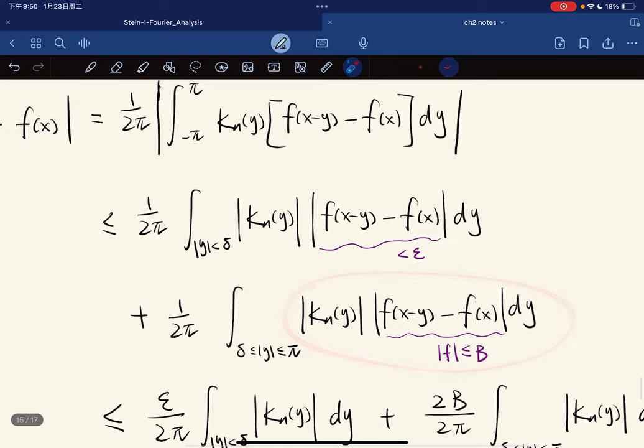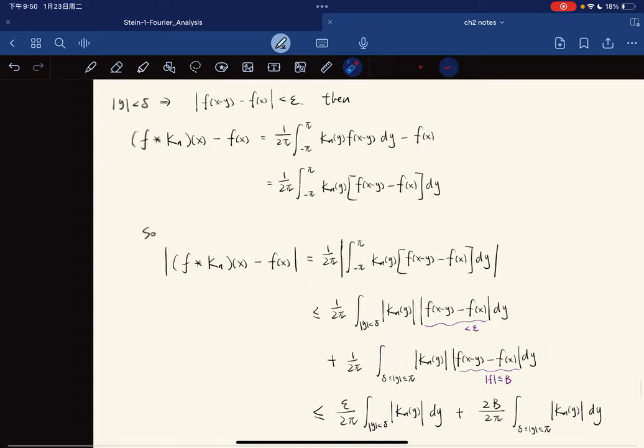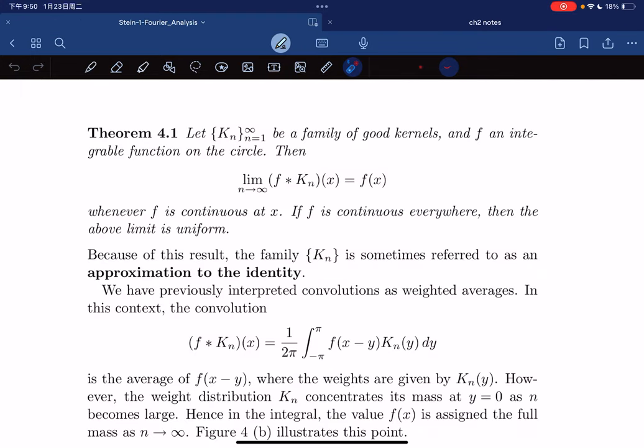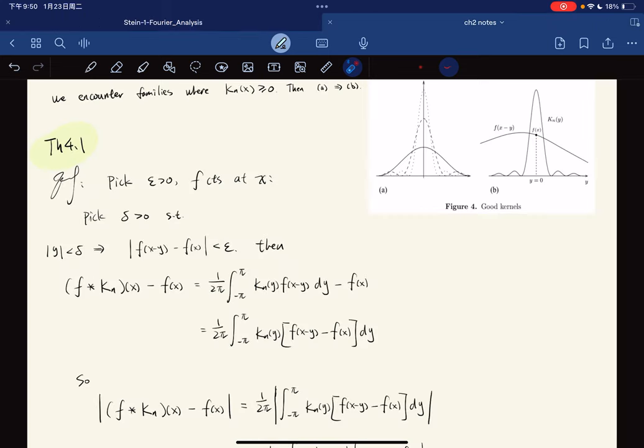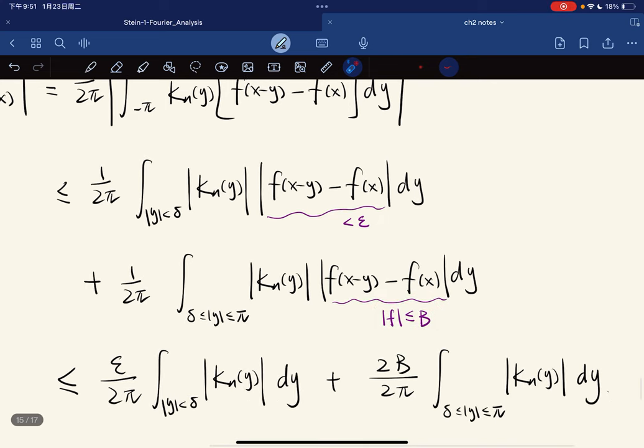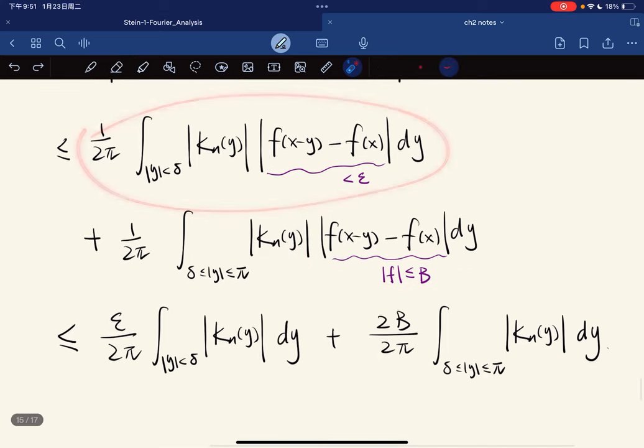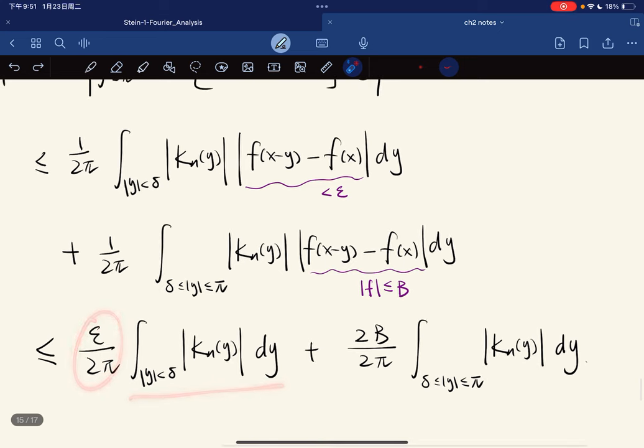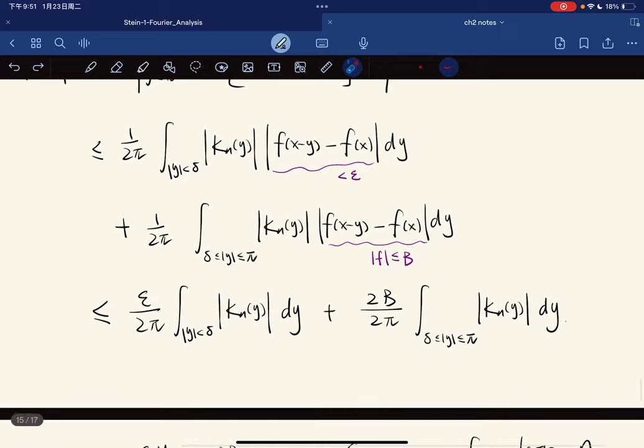For the other part, we know that f is bounded because you're given an integrable function. Each of them is less than B, so we use triangle inequality. This part is ε over 2π of this, and we can put this in front using triangle inequality.